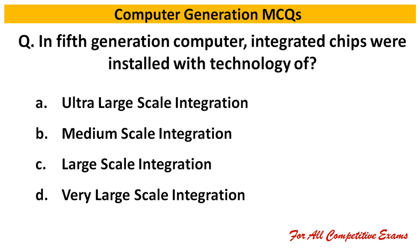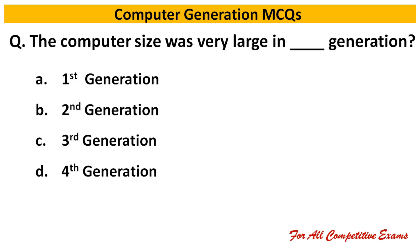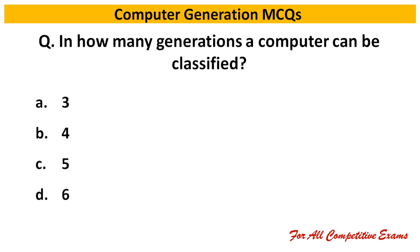Next question: In fifth generation computers, integrated chips were installed with the technology of what? Right answer is option A: Ultra large scale integration. Next question: The computer size was very large in dash generation. Right answer is first generation. Next question: In how many generations can a computer be classified? Right answer is option C.